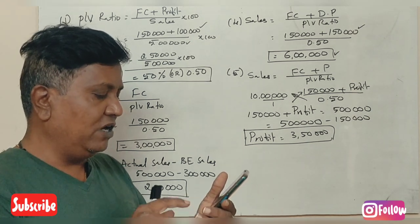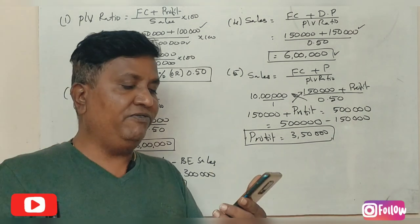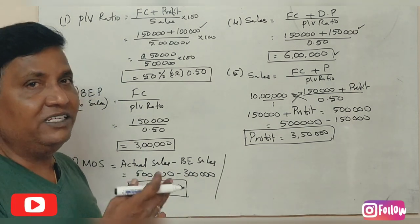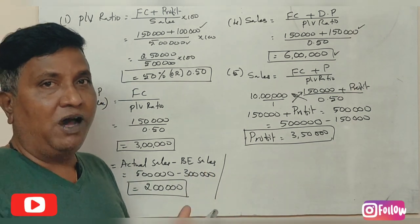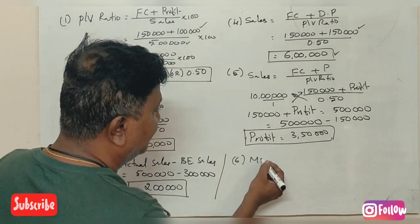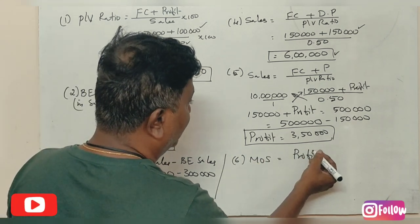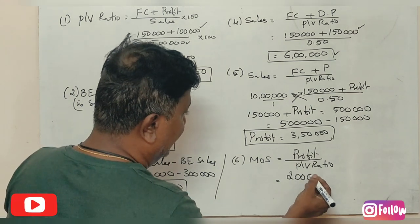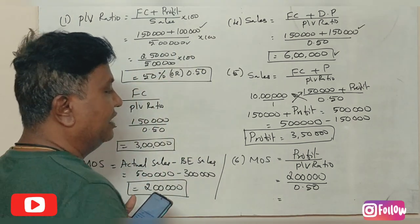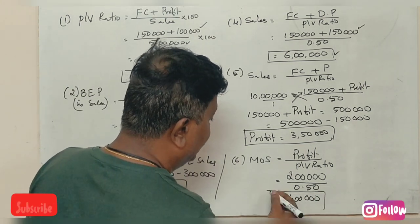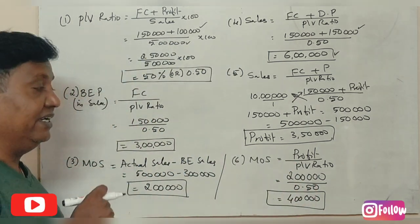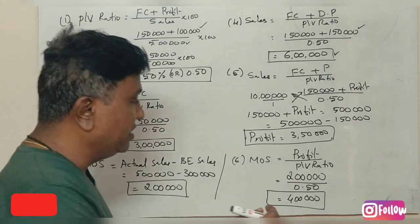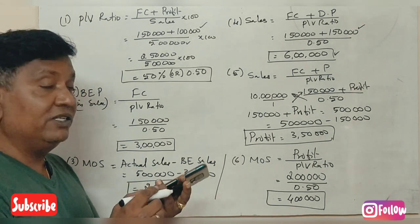Margin of safety for a profit of 2 lakhs: the formula is margin of safety equals profit divided by PV ratio. Profit is 2,00,000 rupees, PV ratio is 50% or 0.50, so margin of safety equals 2,00,000 divided by 0.50, which gives 4,00,000 rupees.